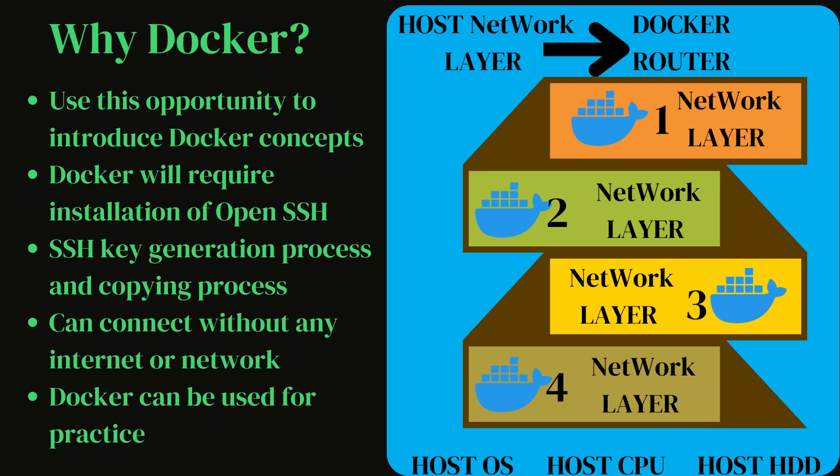The Docker setup will involve OpenSSH software, which is required for getting SSH keys and connecting. The Ubuntu image you download from Docker Hub will be a minimal OS — less than 200-250 MB — so it will not contain all the software that comes with regular Ubuntu. It provides only the basic kernel and Bash shell. The rest of the software you will have to install inside that Ubuntu image. This is a very good way of learning — you learn not just SSH but also how to install software inside a Linux operating system.